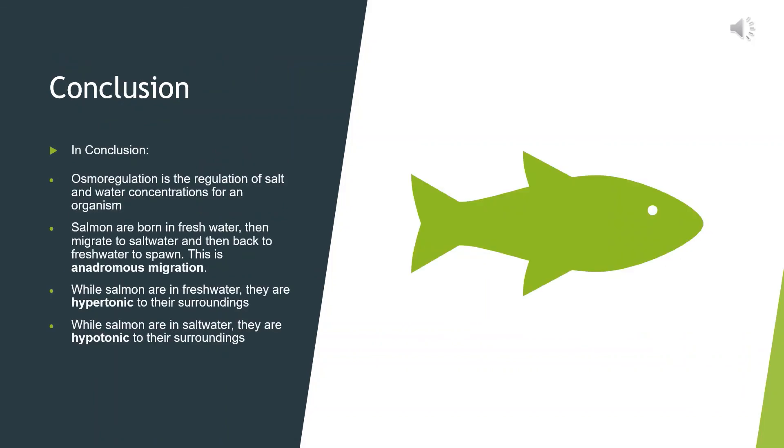In conclusion, osmoregulation is the regulation of salt and water concentrations for an organism. Salmon are born in freshwater, then migrate to saltwater and then back to freshwater to spawn. This is anadromous migration.